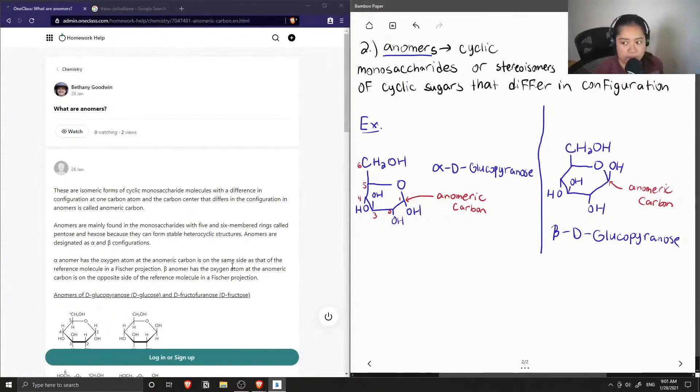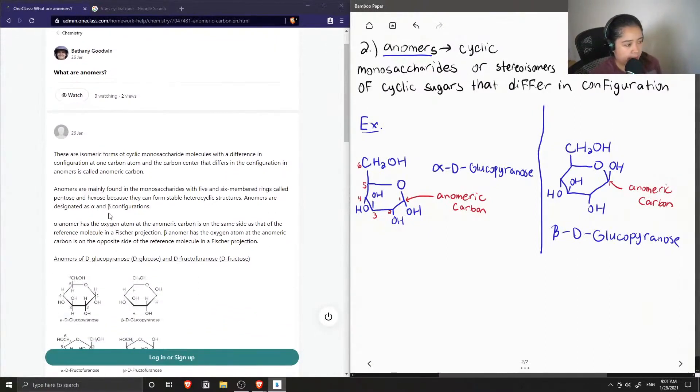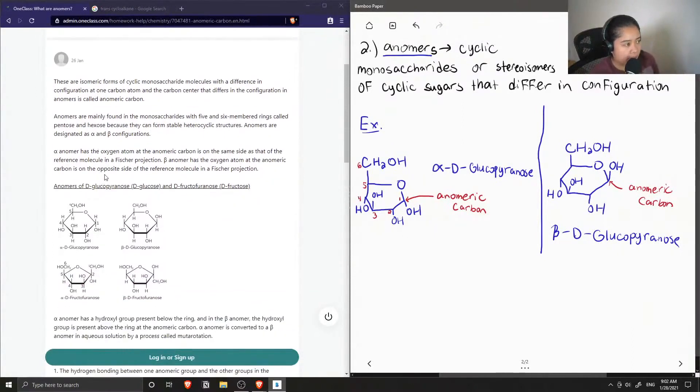Okay, so now let's see what the junior tutor said. There are isomeric forms of cyclic monosaccharide molecules with a difference in configuration at one carbon atom. And the carbon center that differs in the configuration in anomers is called the anomeric carbon. Anomers are mainly found in the monosaccharides with 5 and 6-membered rings called pentose and hexose because they can form stable heterocyclic structures. Anomers are designated as alpha and beta configurations.